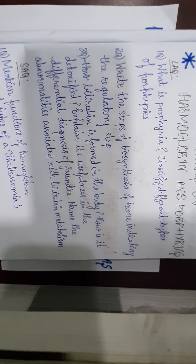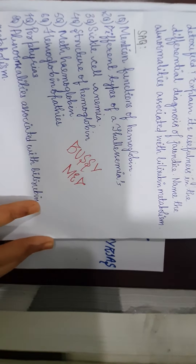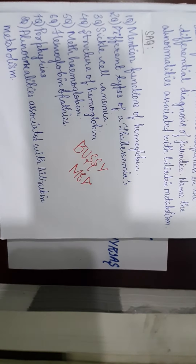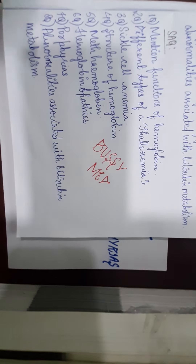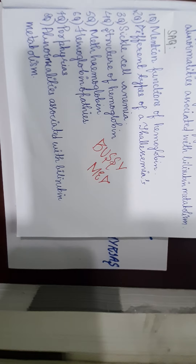Now coming to the short questions. First STQ: mention the functions of hemoglobin. Second: the different types of thalassemia — first define thalassemia, then write the different types. Third question: sickle cell anemia. Fourth: structure of hemoglobin — first define hemoglobin, then describe its structure.